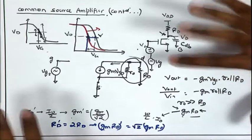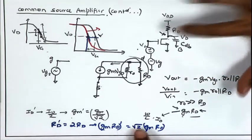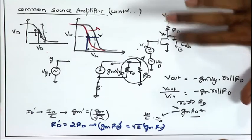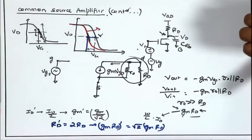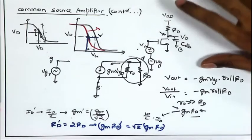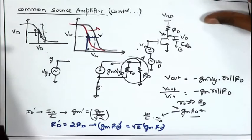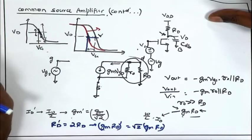Welcome back to the small signal analysis. Now, what about the frequency response? We already have a hint regarding the frequency response — we have already seen that CGD is going to play a role. How do we calculate, in a more comprehensive manner, how do we do the comprehensive frequency response analysis? We are going to discuss a shortcut which will be very handy for doing frequency response analysis for more complicated circuits.